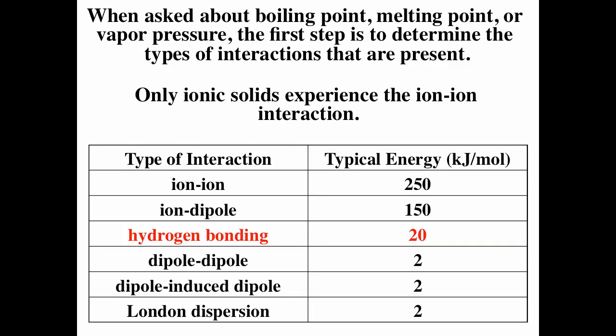When asked about boiling point, melting point, and vapor pressure, the first step is to determine the types of interactions present. Only ionic solids experience ion-ion interaction. Hydrogen bonding is the strongest for any non-charged molecular species. For other molecules, you could have dipole-dipole, dipole-induced dipole, or London dispersion. Hydrogen bonding is a special form of dipole-dipole interaction — especially strong, about 10 times stronger than regular dipole-dipole, dipole-induced dipole, or London dispersion.